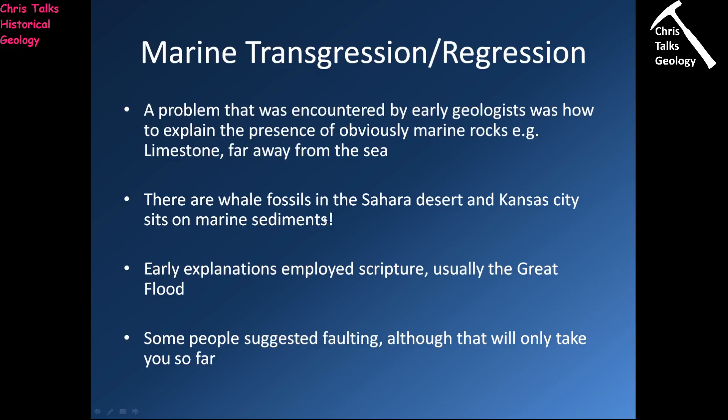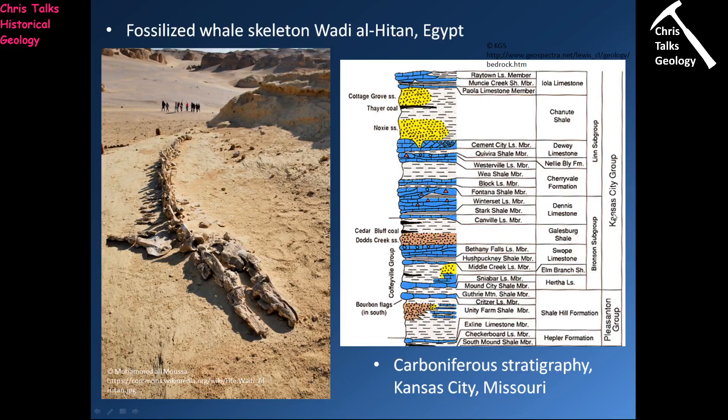The early explanation was simple — they employed scripture, saying these rocks are here because of the Great Flood. There were also people who suggested faulting: rocks being pushed inland from the coast by faults. That could work on a local scale, but it would be essentially impossible to push a piece of rock from the coast all the way to Kansas City — that's just too far. Faulting can work locally, but not over such a large scale.